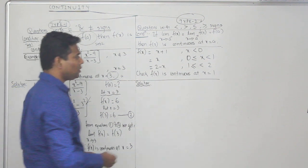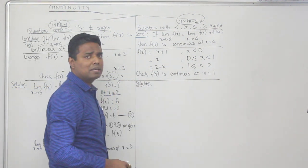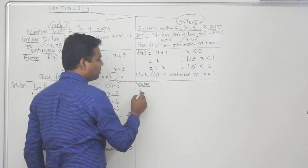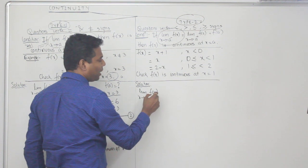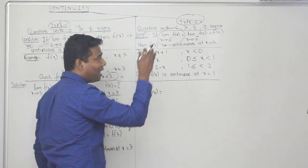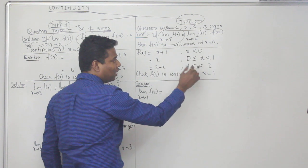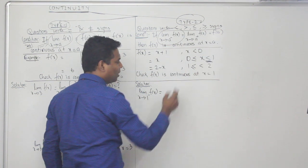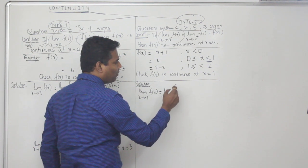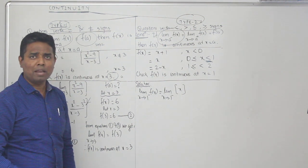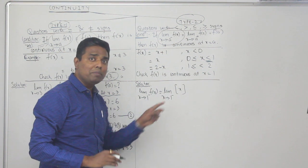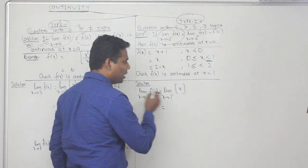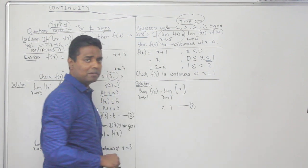The Type 2 example: f(x) = x + 1 where x < 0; f(x) = x where 0 ≤ x < 1; and f(x) = 2 - x where x ≥ 1. Check if f(x) is continuous at x = 1. Step 1: find limit x→1⁻ f(x). Since x is less than 1, we use the function for 0 ≤ x < 1, which is x. Substituting x = 1, the limit equals 1. This is equation number 1.